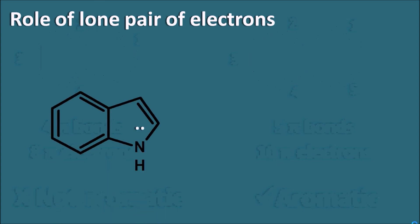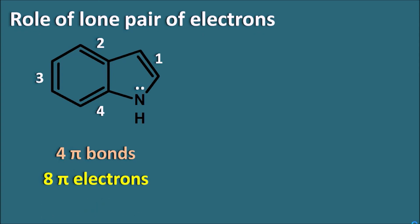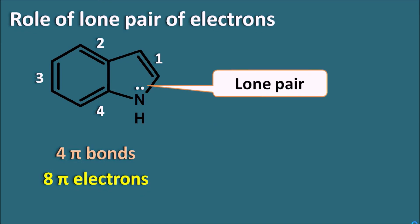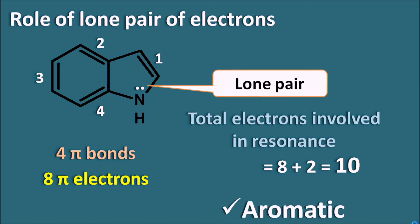What is the role of lone pair electrons? Consider a structure with 4 pi bonds, which gives 8 pi electrons — seemingly not aromatic. However, the lone pair of electrons on the nitrogen can also participate in resonance and produce conjugation. The effective number of electrons involved in resonance is 8 + 2 = 10. Since 10 obeys the 4n+2 pi rule, the compound is aromatic.